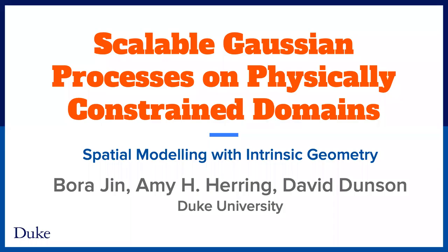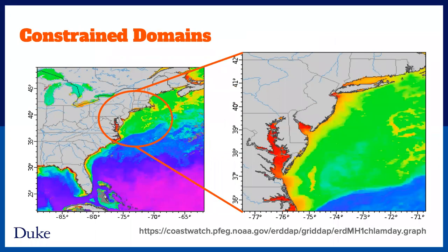I'm going to introduce to you a new scalable Gaussian process on physically constrained domains. There are many applications where measurements are collected and meaningful only in some constrained domains. Measurements in the ocean with a complex coastline is one example. This map shows the level of chlorophyll A along the east coast of the United States. We see some noticeable differences in chlorophyll A levels between A and B, blocked by the land.